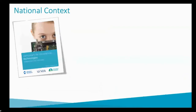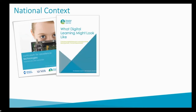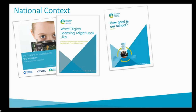In the national context, in 2016 we published our updated technologies curriculum. We refocused and put a lot more depth into what is expected of learners from early years right through. We also produced a document called 'What Digital Learning Might Look Like,' which differs from benchmarks and experiences and outcomes - it gives examples of what learning might look like in the classroom, including using 3D models. The next slide has a QR code to access it, and it's also available from Education Scotland's National Improvement Hub.